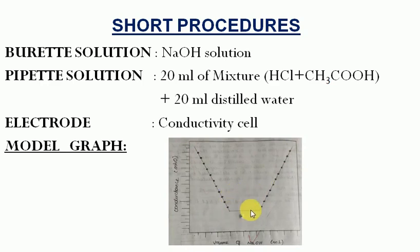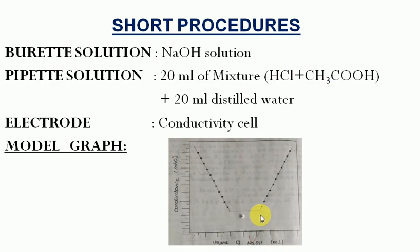There are two end points: a first end point and a second end point. At the first end point, hydrochloric acid is neutralized. At the second end point, the acetic acid is neutralized.